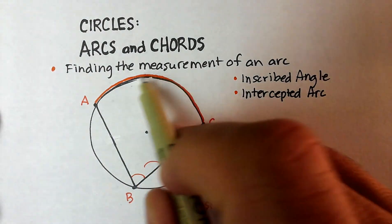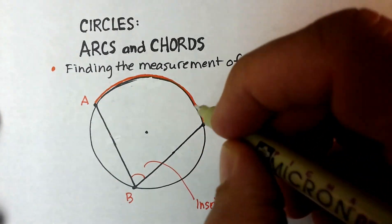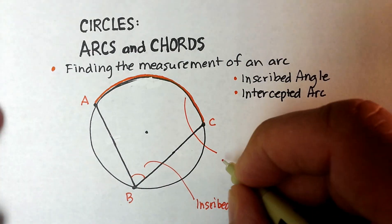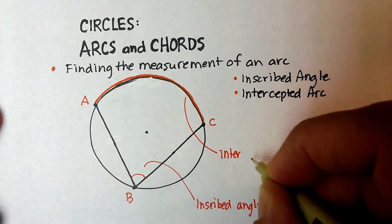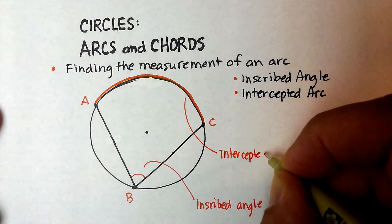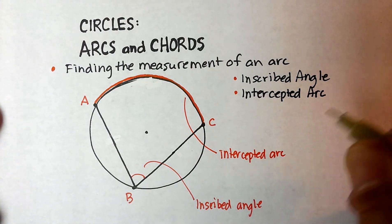The arc that it forms is called the intercepted arc.